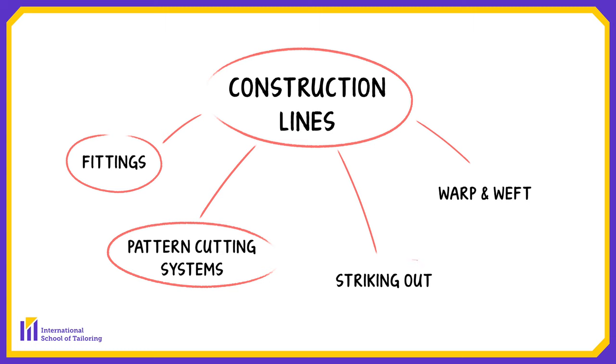The way construction lines are connected to striking out is, of course, we need to lay our pattern with the construction lines on it on our fabric. And so when we're striking out, we need to have that information. And the way it's connected to the warp and the weft is that construction lines usually, especially on modern cutting systems, represent either the warp or the weft of the fabric.